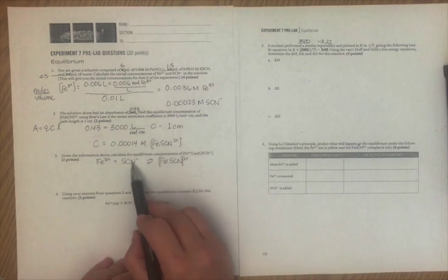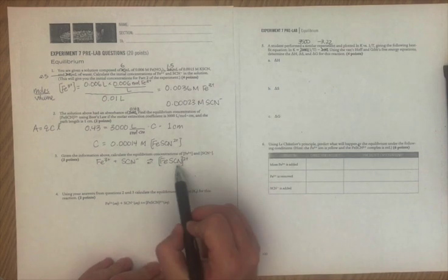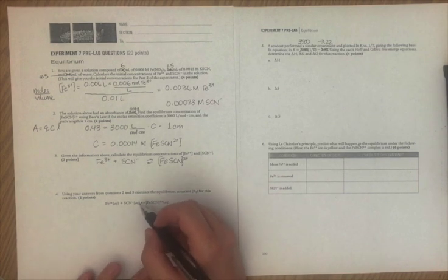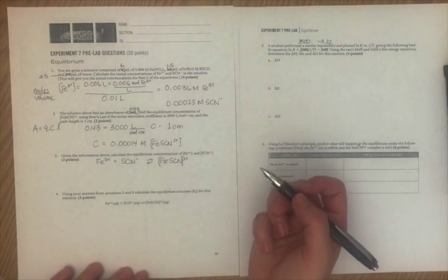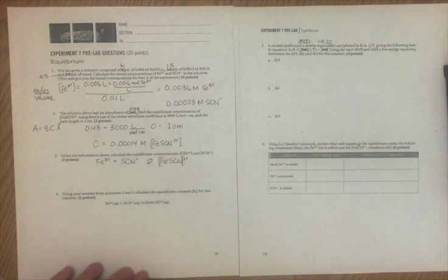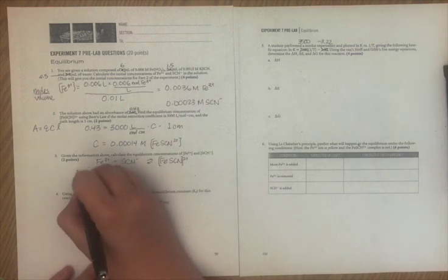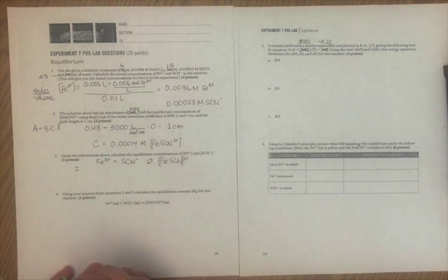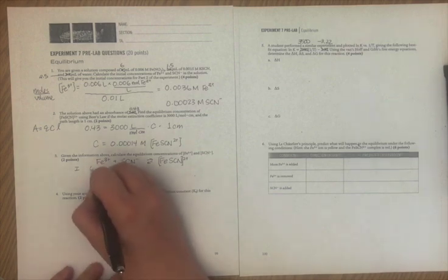So what's happening? We started with an initial amount of this, an initial amount of this, we mixed them together, we're going to get some of this. So I'm going to make an ICE table. This is an easy way to organize your initial concentrations, the change that happens, and the equilibrium. So our initial concentrations that we had, we calculated in the first step.